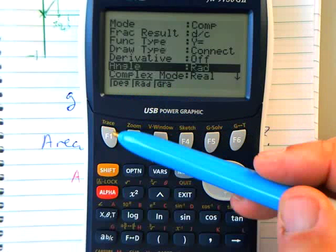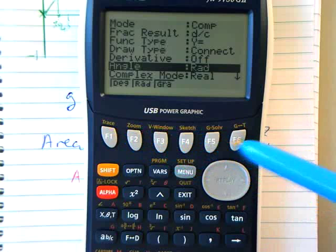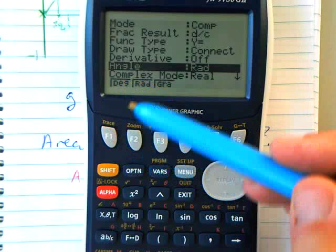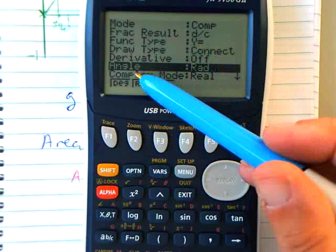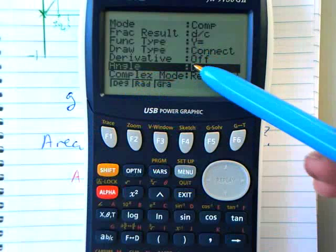Now whenever you see these little boxes they refer to these buttons so the first box is the first button and the second box is the second button and so on. So you want it in degrees so you're going to press the first button and you'll see it's changed it into degrees.